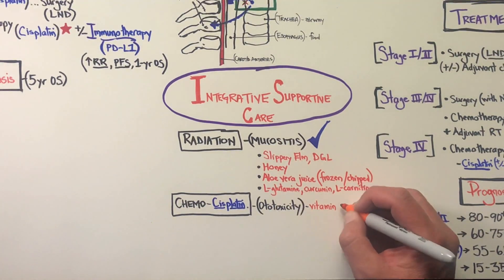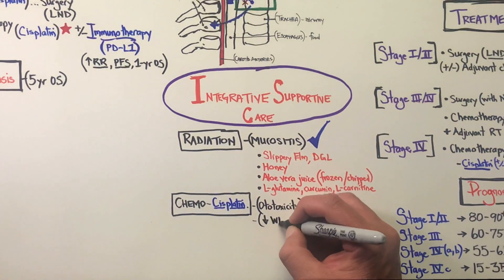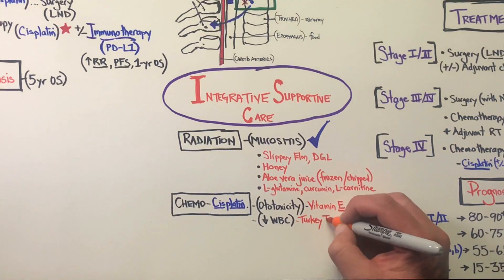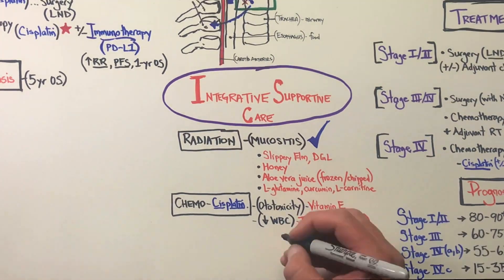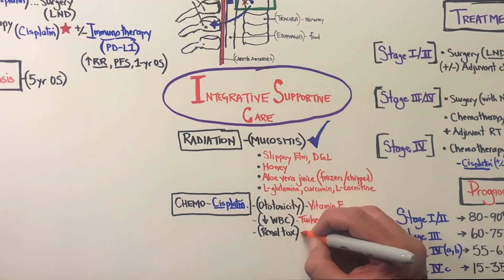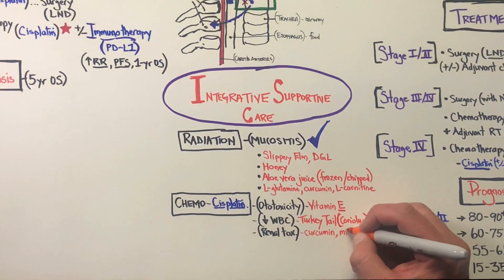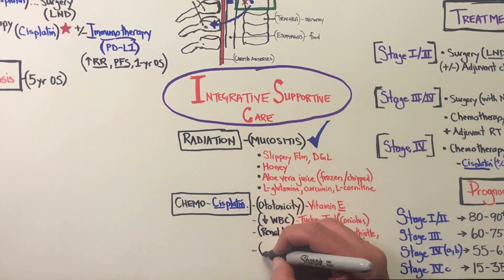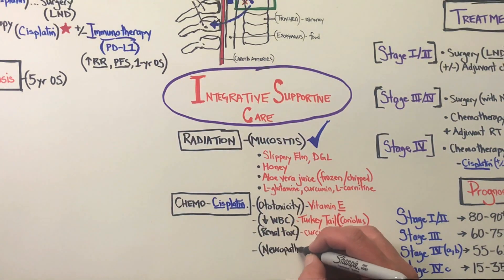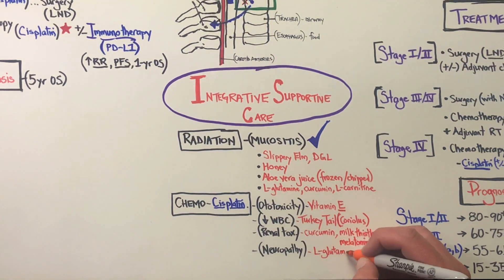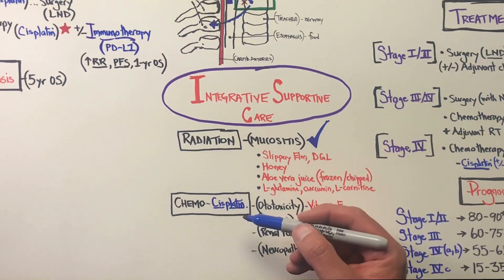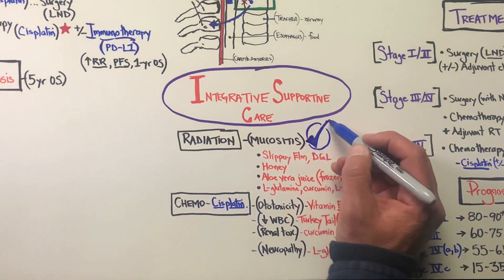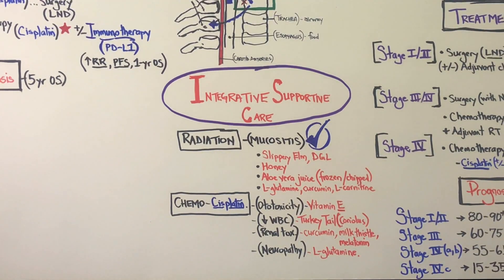Cisplatin has some very unique side effects and complications that can arise. Ototoxicity — ringing in the ears from cisplatin — can be mitigated; clinical trials show vitamin E can be used for that. Low white blood cell counts: turkey tail is one of the primary options. Renal toxicity, so toxicity of the kidneys: curcumin, melatonin, milk thistle. And neuropathy in general can also be benefited from L-glutamine.